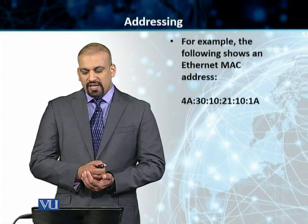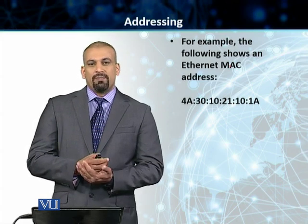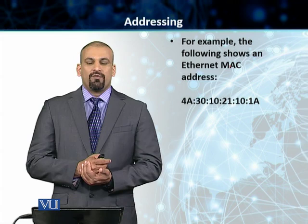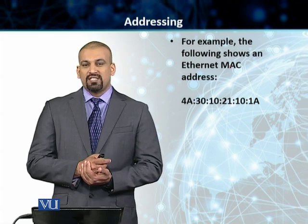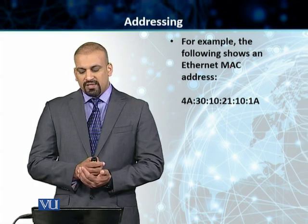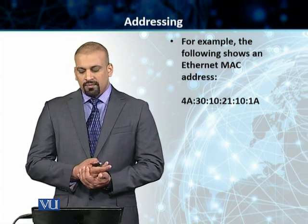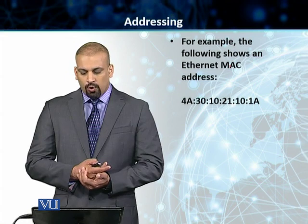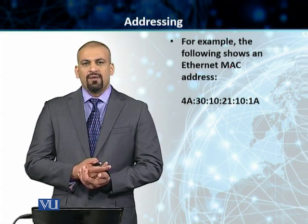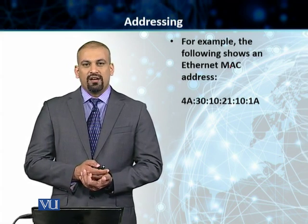As you can see on the slide, we've got a particular Ethernet MAC address — it's also called a MAC address, a physical address, or a link layer address, and you have gone through that extensively in our previous discussions of data link layer. This is how we represent it. In this particular case, you've got 4A:30:10:21:10:1A. This is an example of a MAC address or a link layer address.